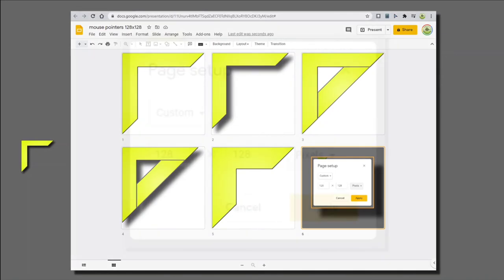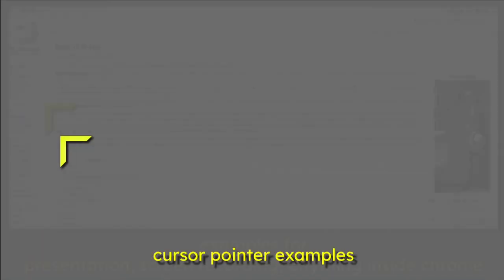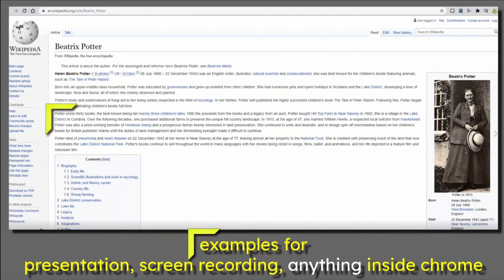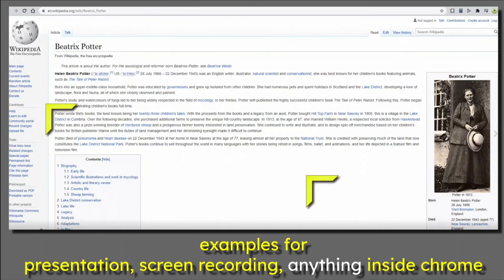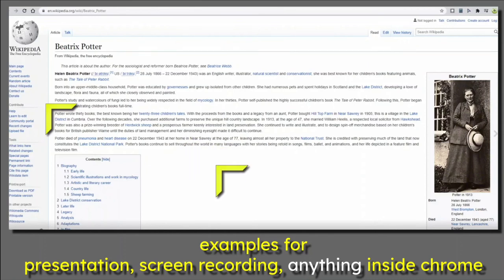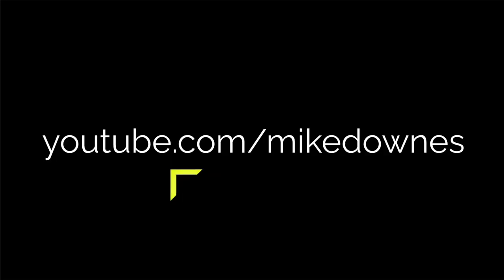In conclusion, looking at cursor examples to finish up — this custom pointer or custom cursor could be used not only for Google Slides presentations but for screen recording anything inside Chrome. The slide shows are just one example. I was looking at the Beatrix Potter Wikipedia page and by reading each paragraph you can see how it works: I can actually start to frame up certain things, use this as a ruler, point to things like Beatrix Potter's hat. This works for Facebook, pretty much any site you wish to look at. Once again, this is framed by Mike Downs.